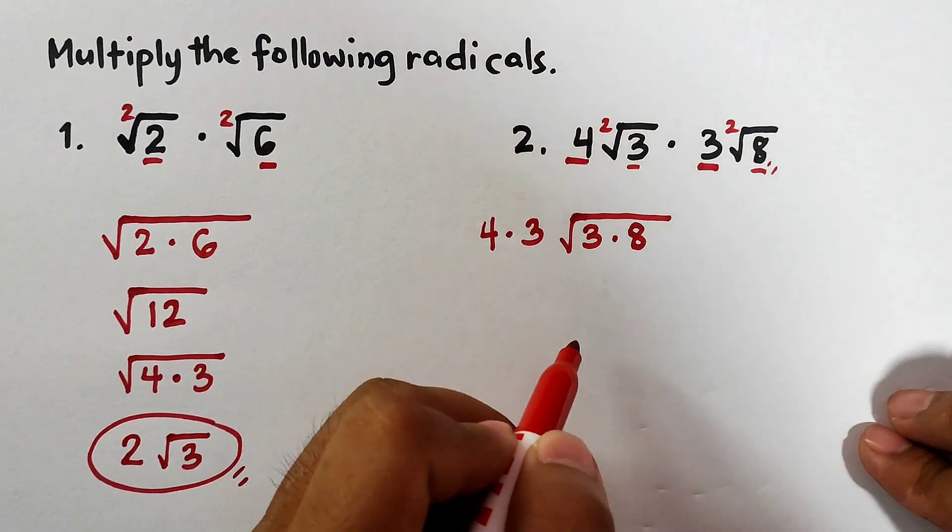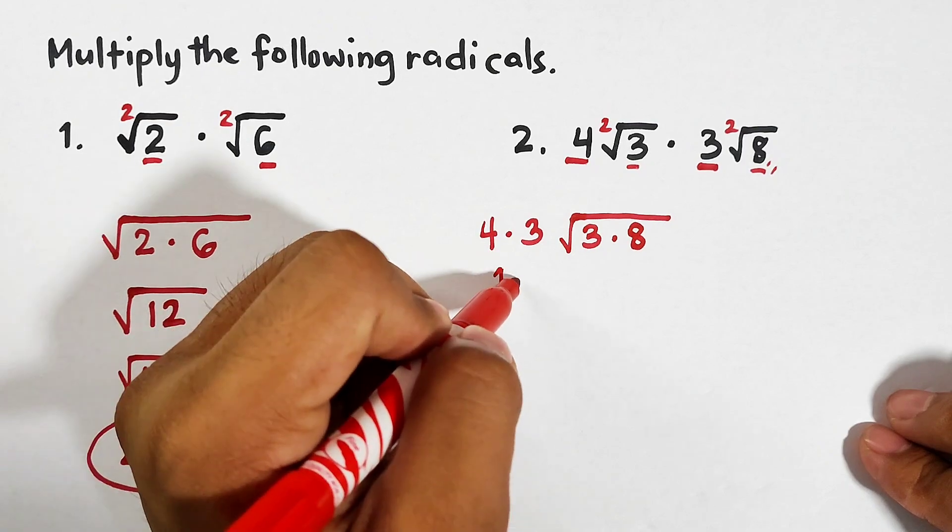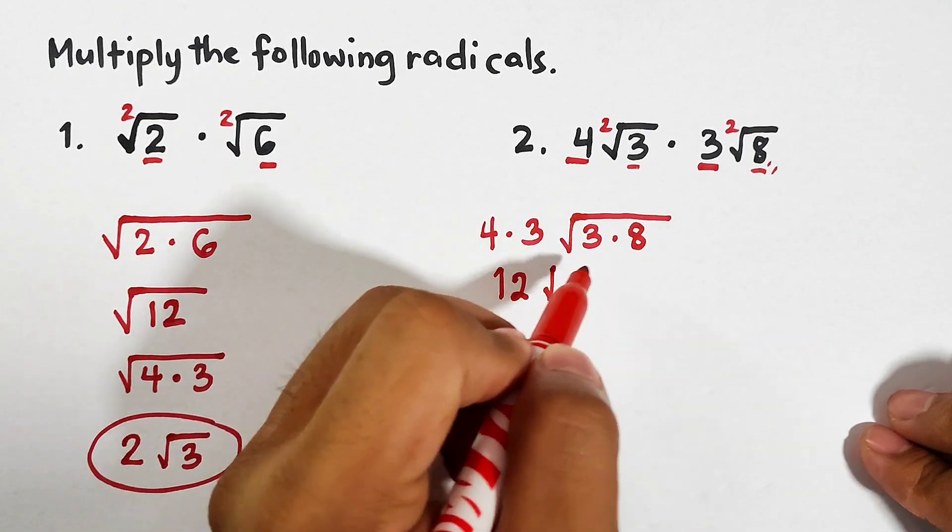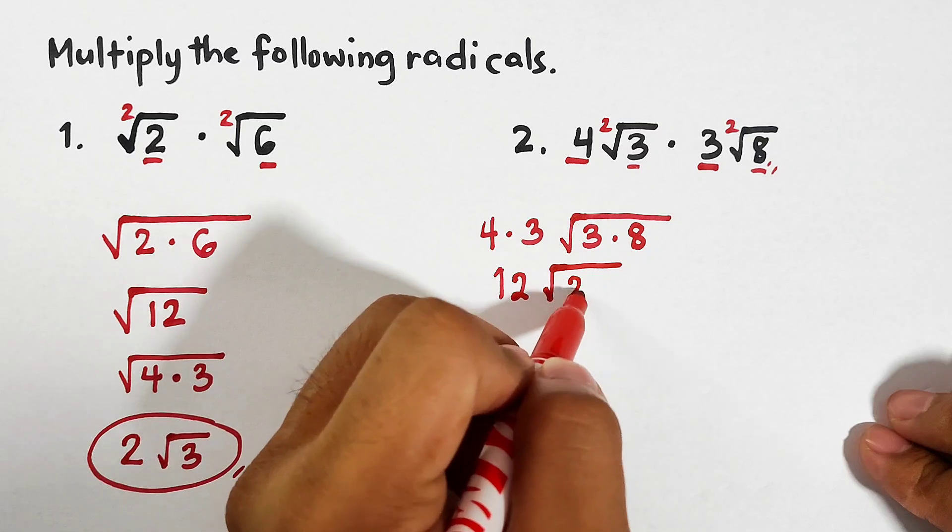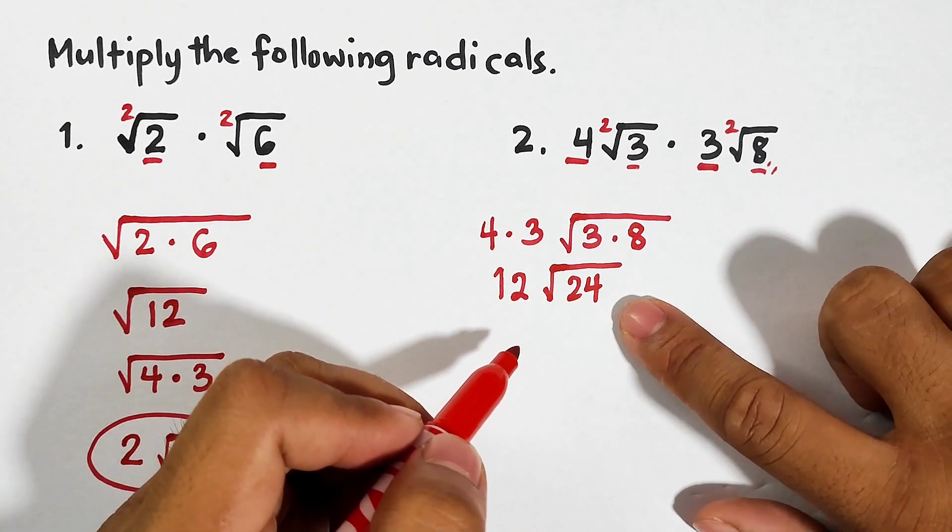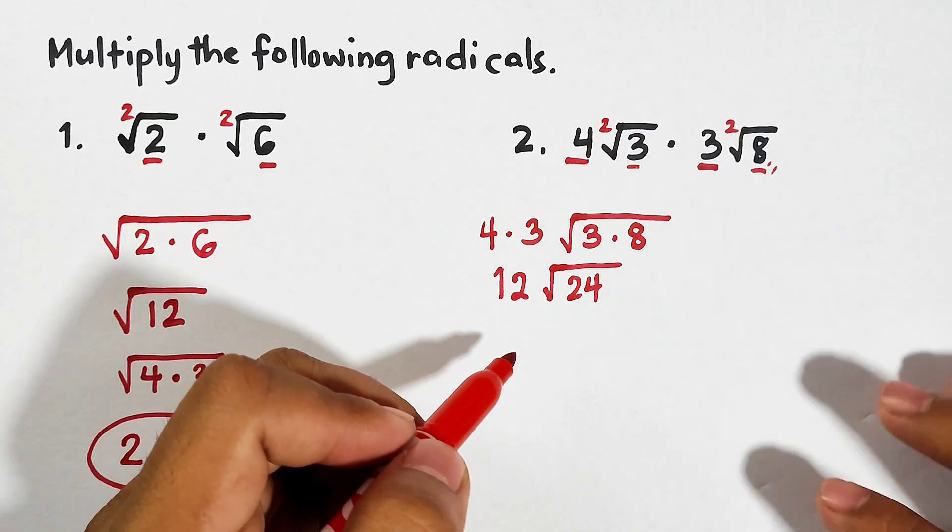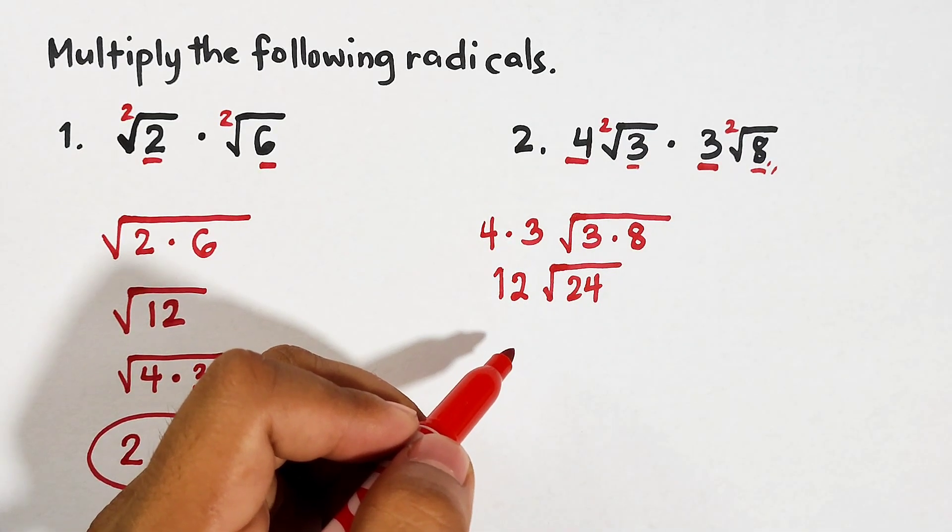It will go like this: copy the radicals and then multiply the number inside. We have 3 times 8. Simplify this. This will become 12, and here this will become the square root of 24.